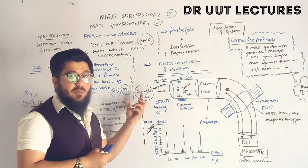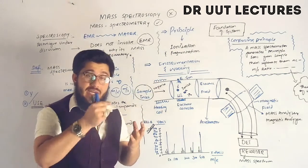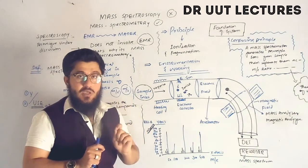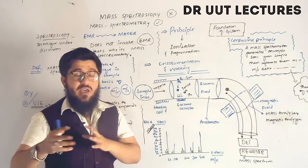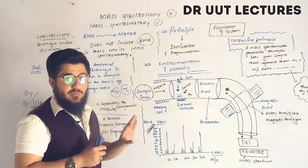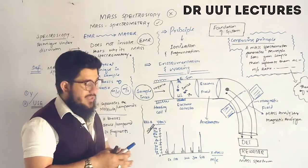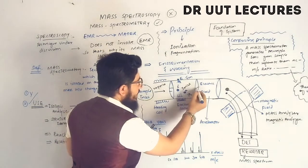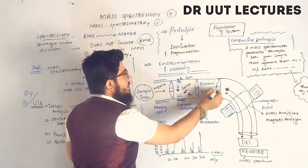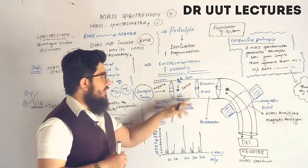For the working: we take a sample and pour it through the sample inlet into the vaporization chamber, where our sample is vaporized. An important point — the sample must be in gaseous form, so any sample must be converted to gas first. After vaporization, the sample passes through a slit into the next chamber.